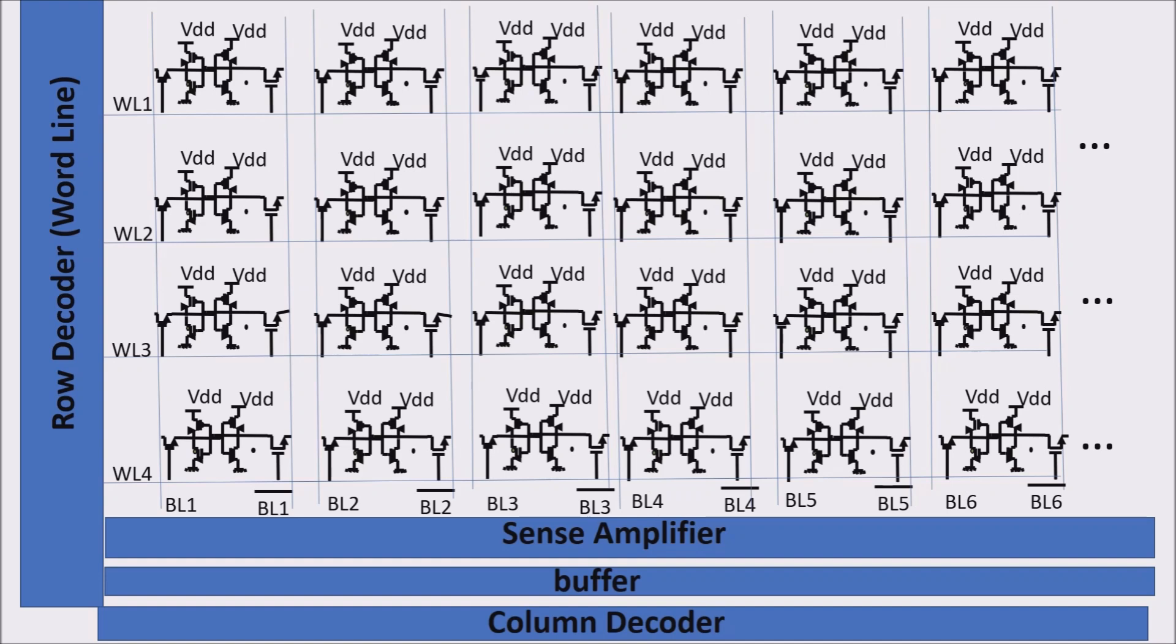In the read operation, we read a whole row of bits, storing it in the buffer, and only later we select the right cell through the column decoder.